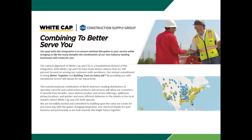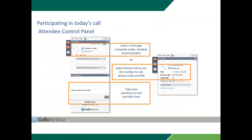Before we get started, I'd like to go over a few items so you know how to participate in today's webinar. We do have everyone muted to eliminate any noise and distraction. You should see the attendee interface on your computer desktop. In the upper right corner, when you join today's call, you can select to join by phone or computer audio. You can submit your questions to today's presenter by typing them into the questions pane of the control panel. We will address them during the Q&A session at the end of today's presentation.